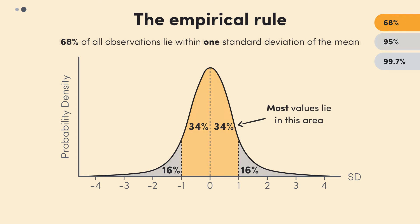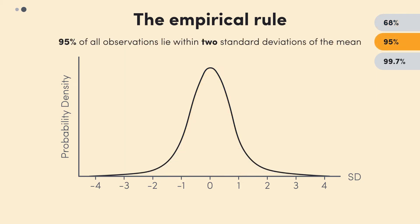The empirical rule secondly says that approximately 95% of all observations in a normal distribution lie within two standard deviations either side of the mean. So 95% of the values lie between these two boundaries. As you can see, it's very probable that if you randomly choose a value in this distribution, it will be in this area. Again, the remaining 5% of the values are split into the tail ends of the distribution. So 2.5% of the values will lie in each tail.